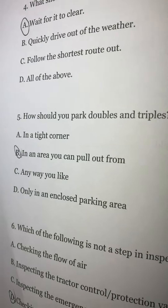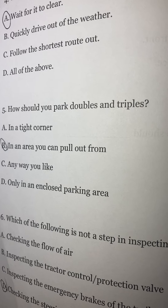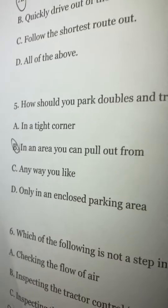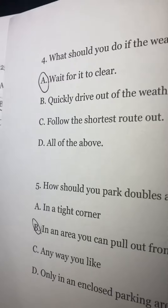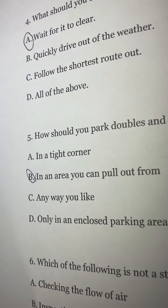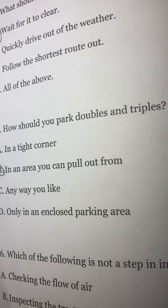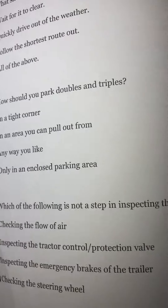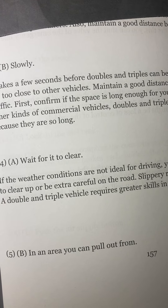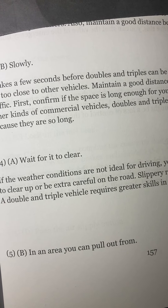Number five: how should you park doubles and triples? A) in a tight corner, B) in an area you can pull out from, C) any way you like, or D) only in an enclosed parking area. The answer is B, in an area you can pull out from.